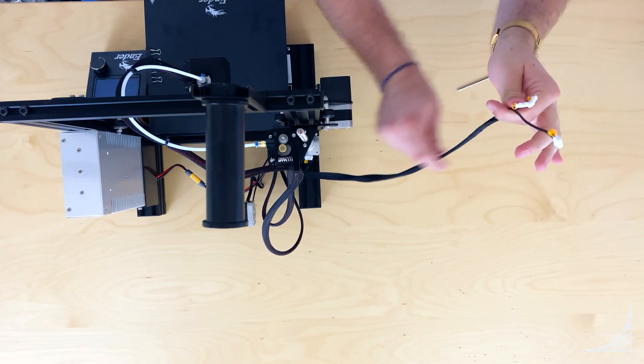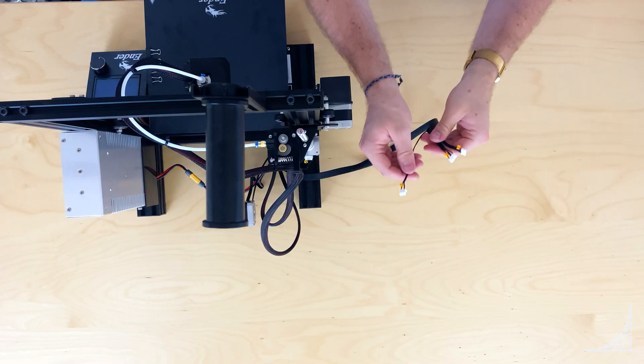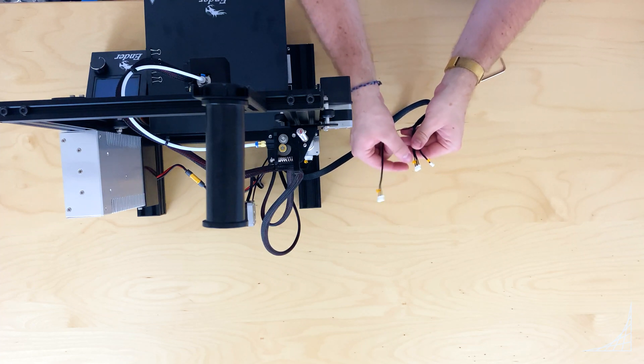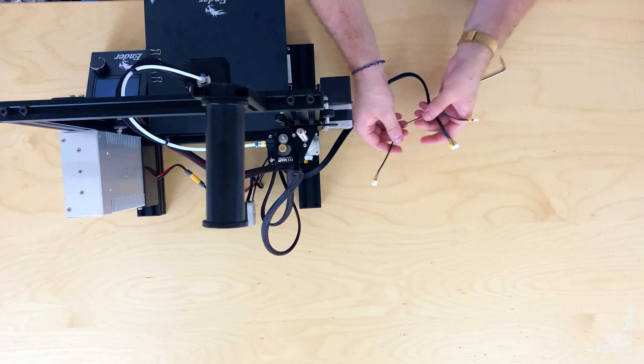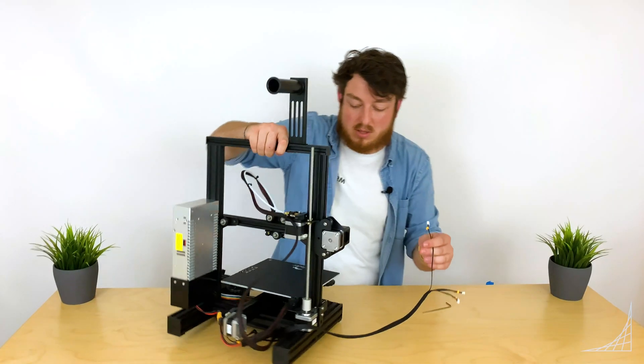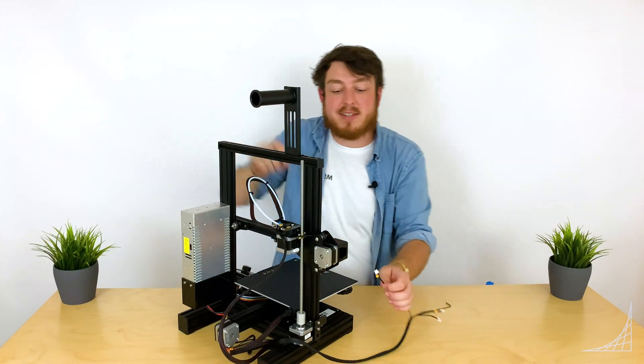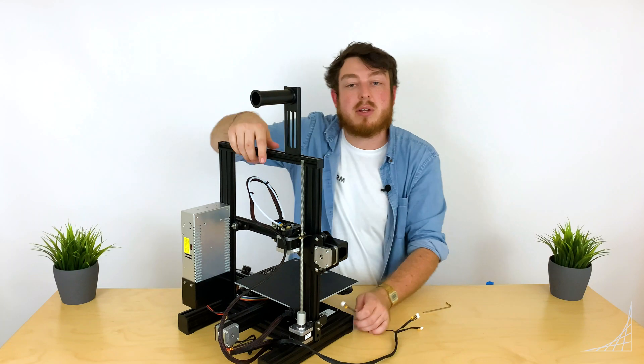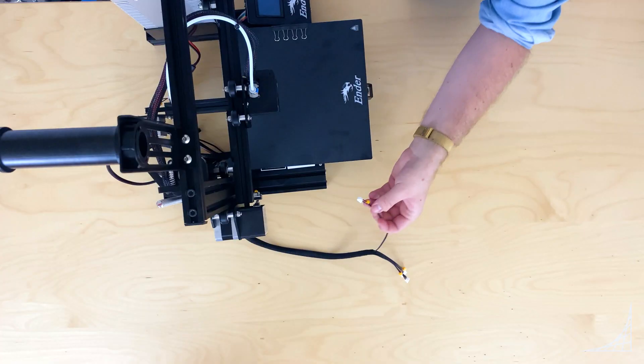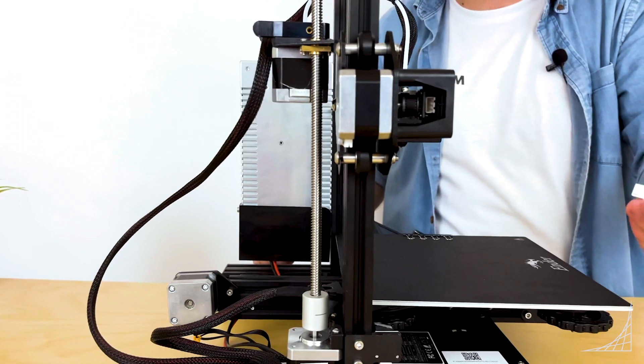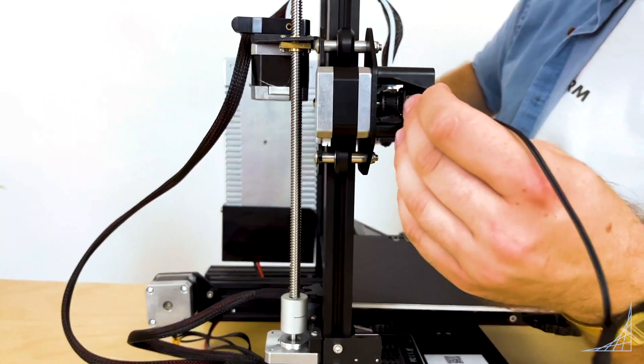We've got our X limit switch, X motor, and E motor. We'll start off with a tricky one. The narrow connector is going to go into the limit switch that is just behind the QR code. This one can be a little tricky; you may actually need to grab some tweezers to push it all the way in.